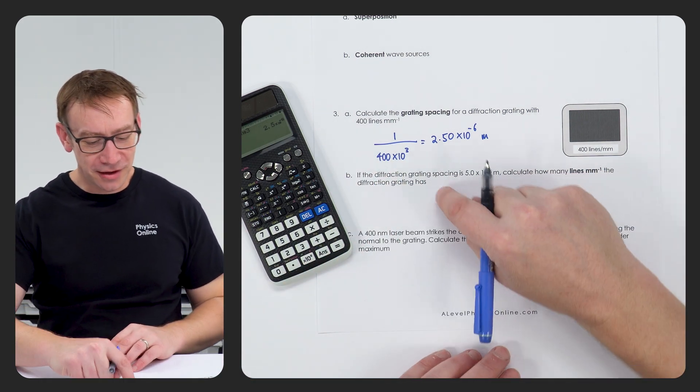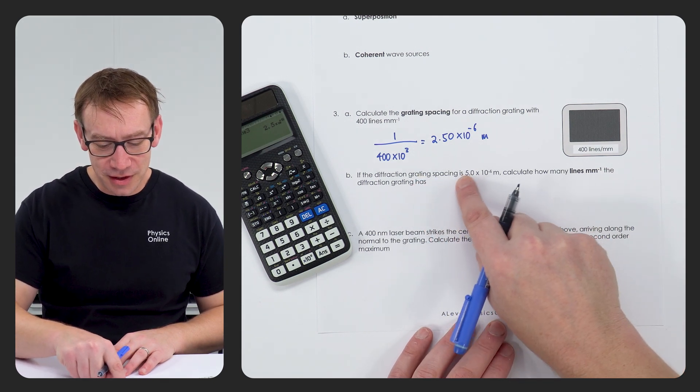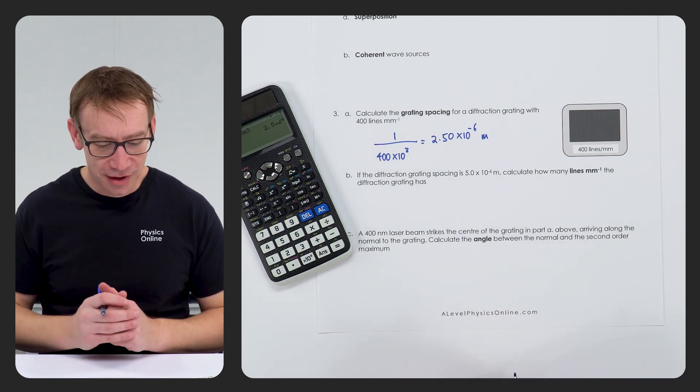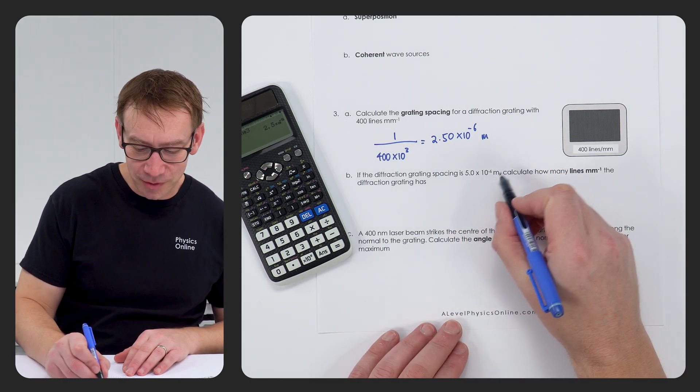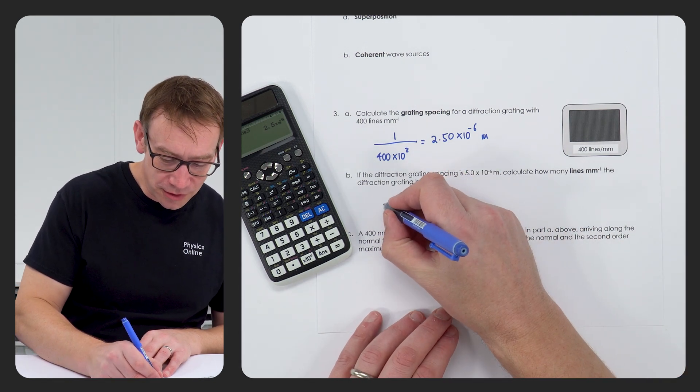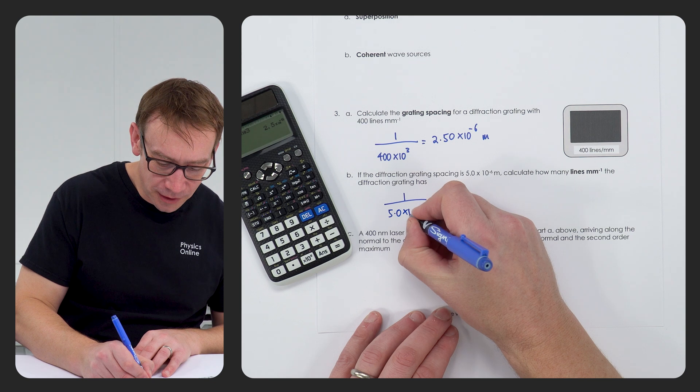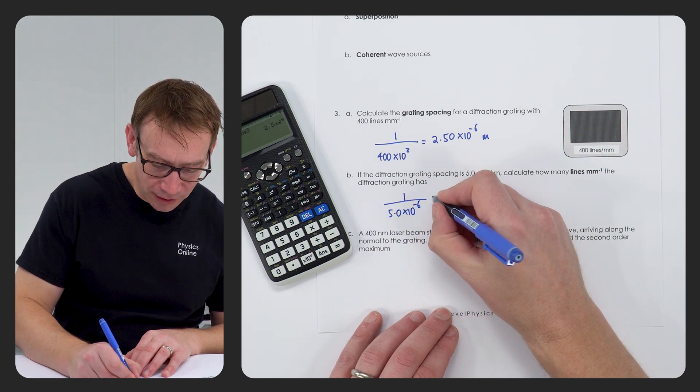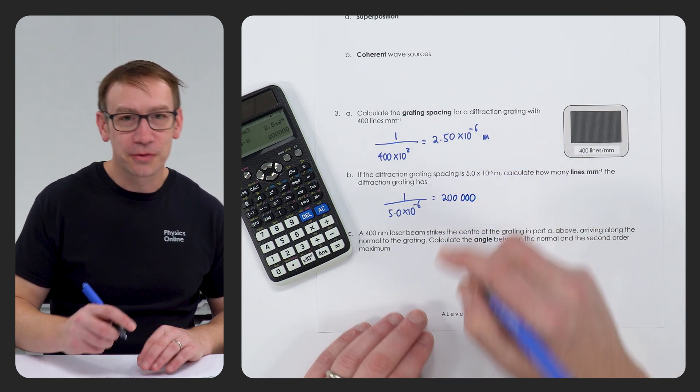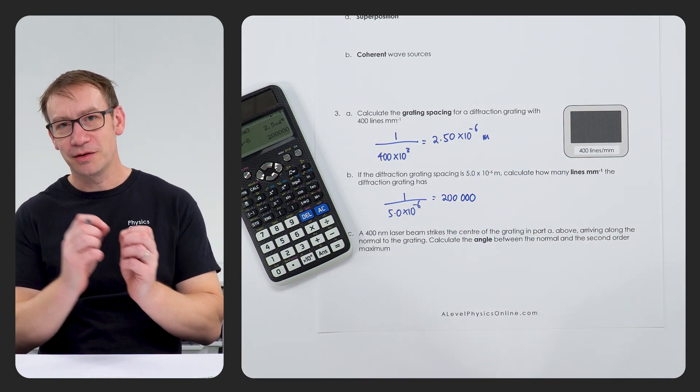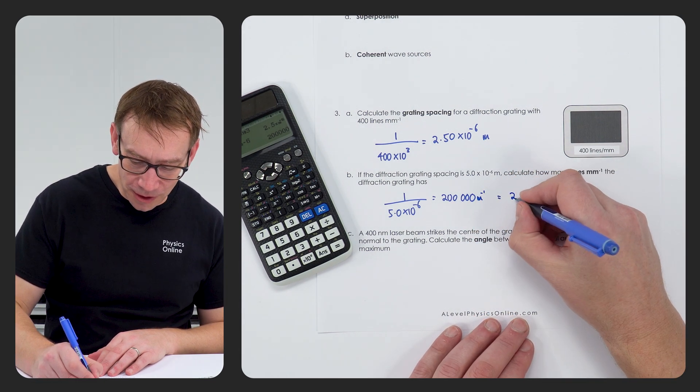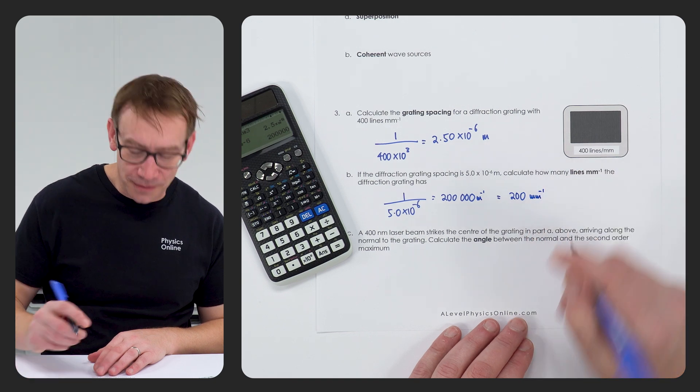Of course we can go the other way. In the second question, if we've got the distance between the gratings, we could then look at how many lines per millimetre that would be. So here, if there's 5.0 times 10 to the minus 6 metres between each spacing, then all we need to do is 1 divided by that number. This gives an answer of 200,000 lines per metre, which equals 200 lines per millimetre.